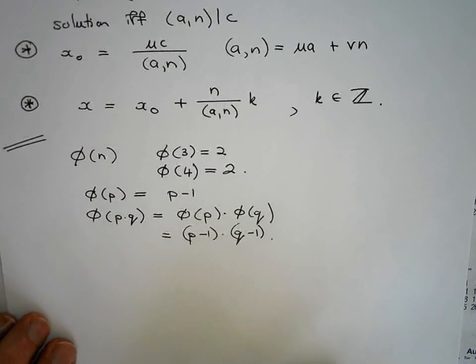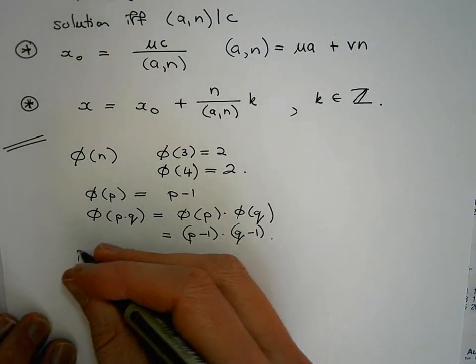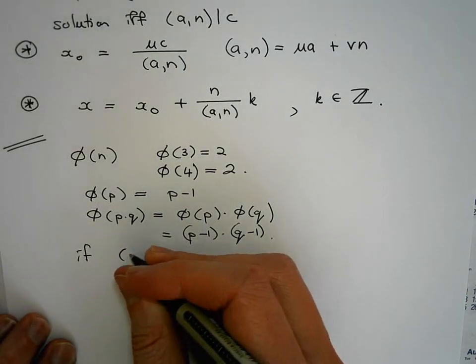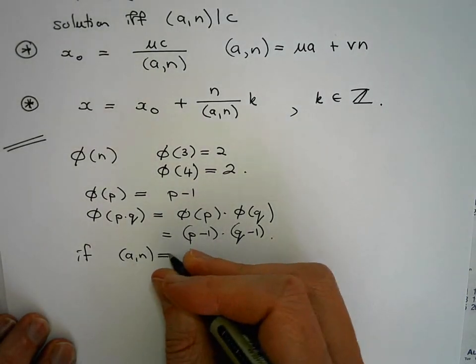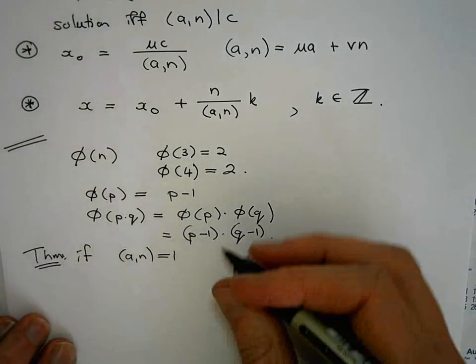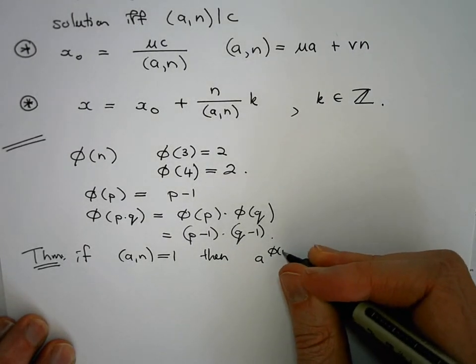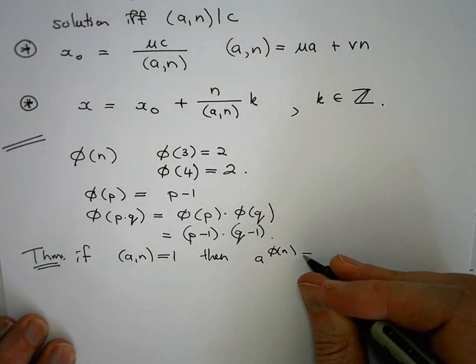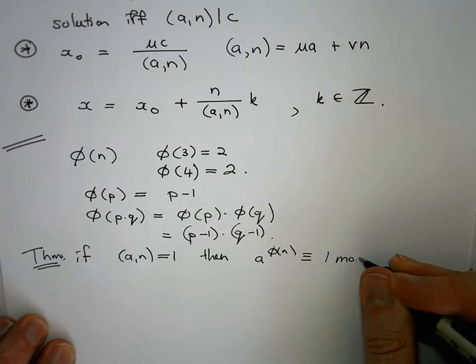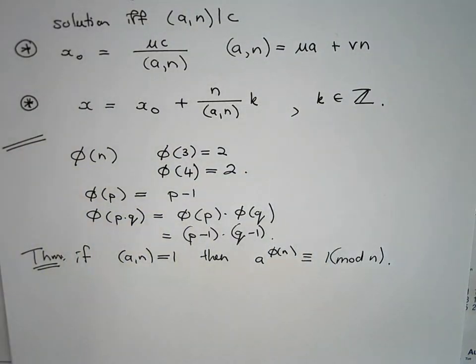Then there's a theorem, Euler's theorem, that tells us that if a and N are relatively prime, then A to the power of phi N is congruent to 1, modulo N. And these are the basic facts that we are going to use in our RSA cryptographic systems.